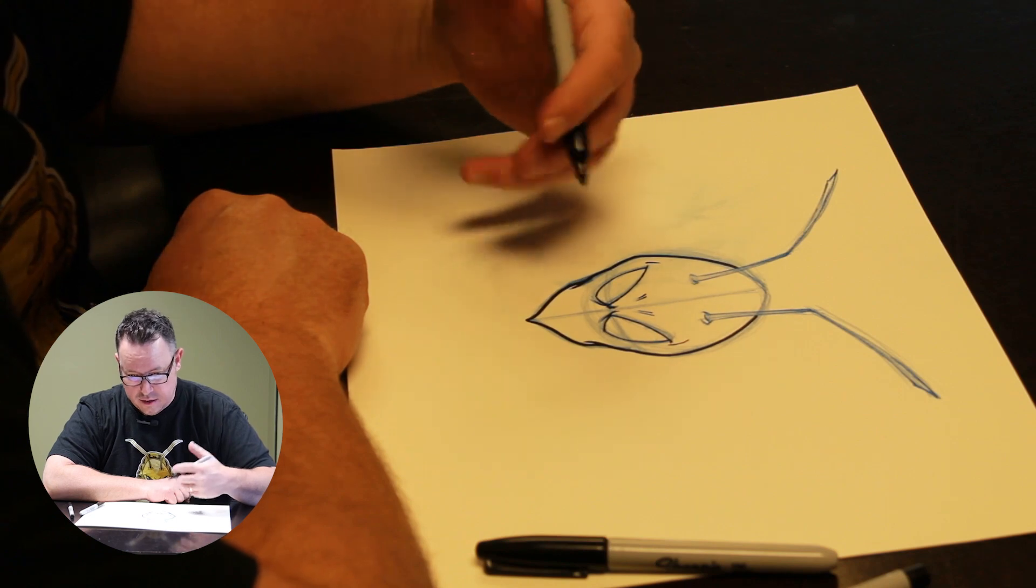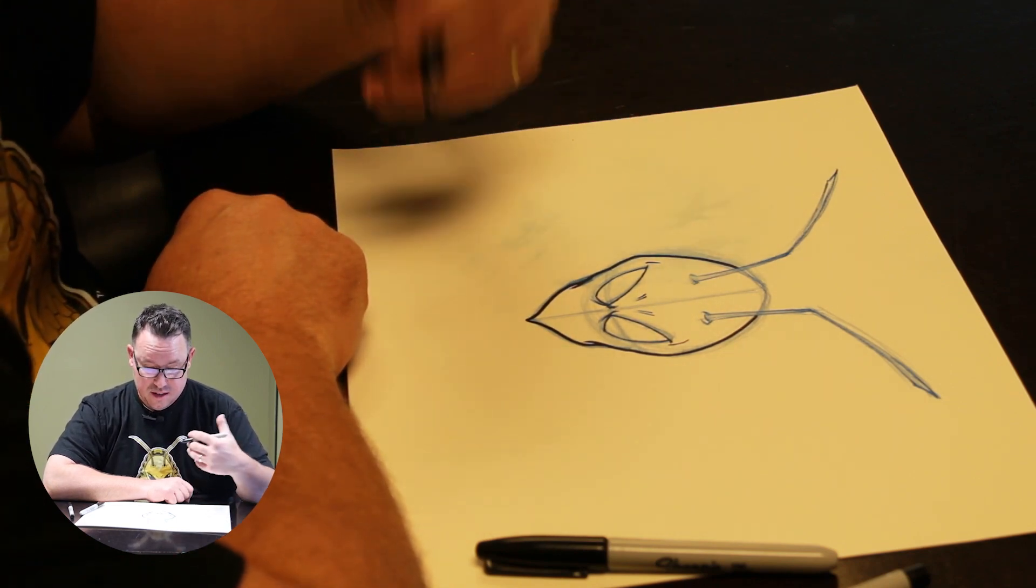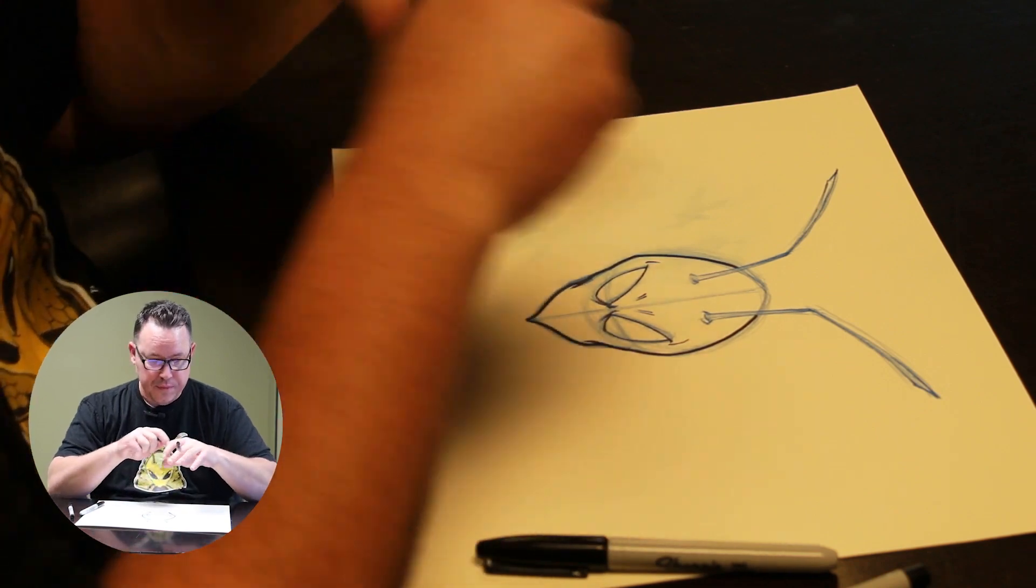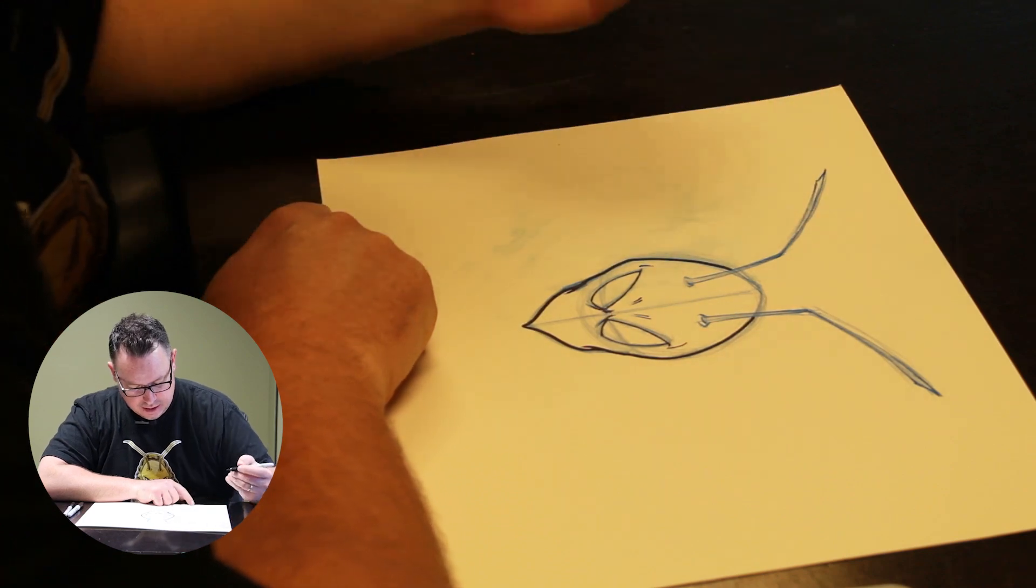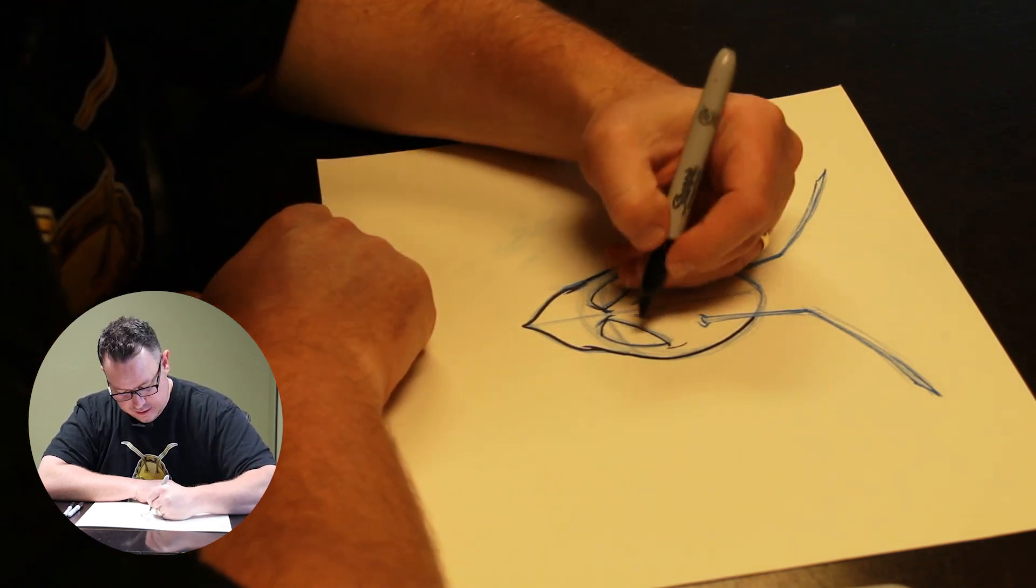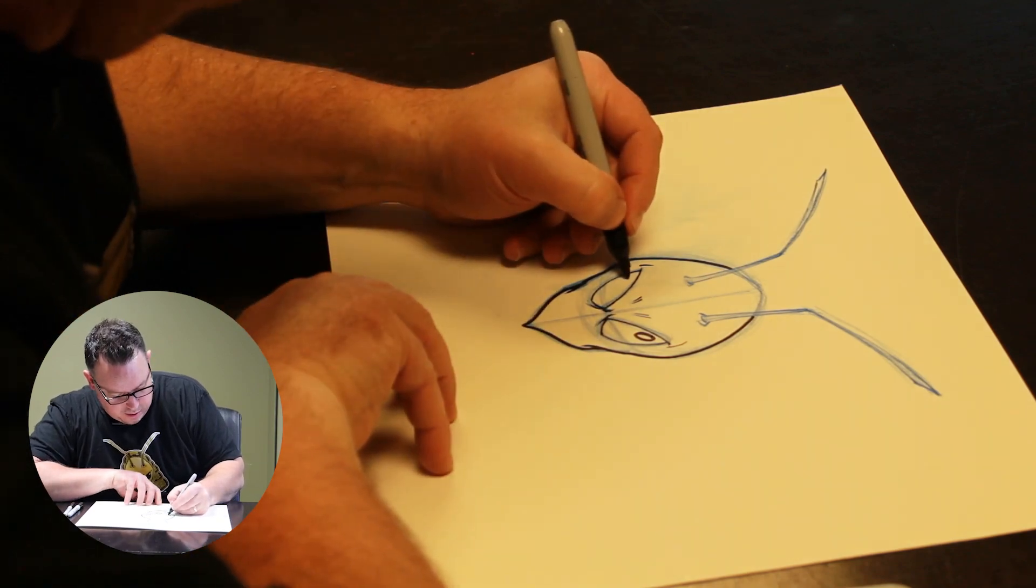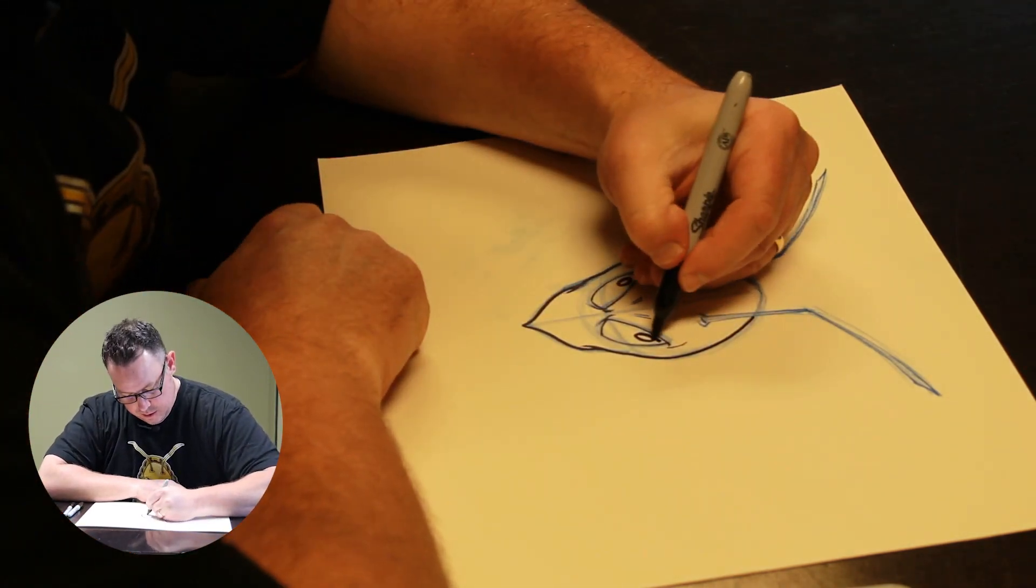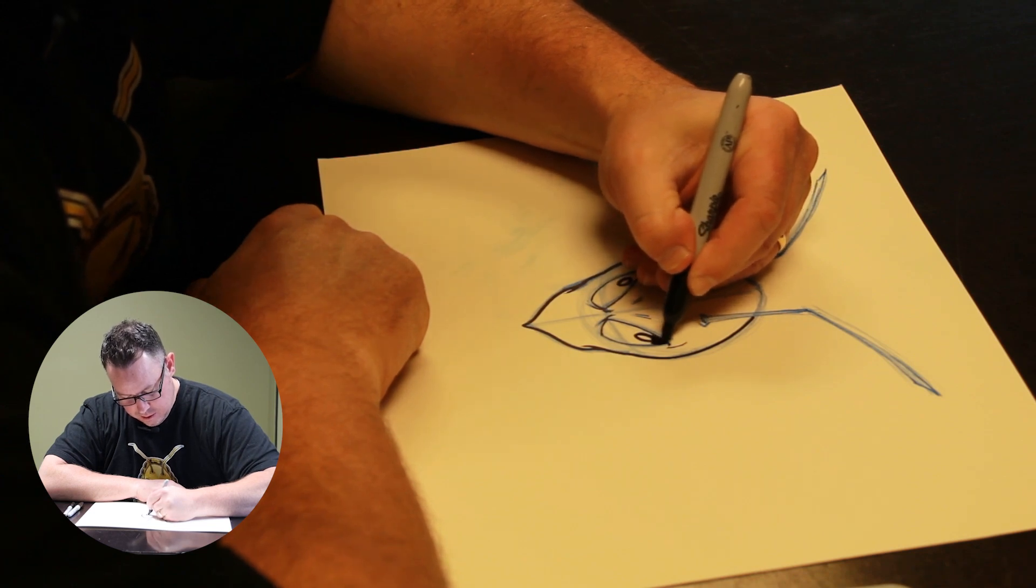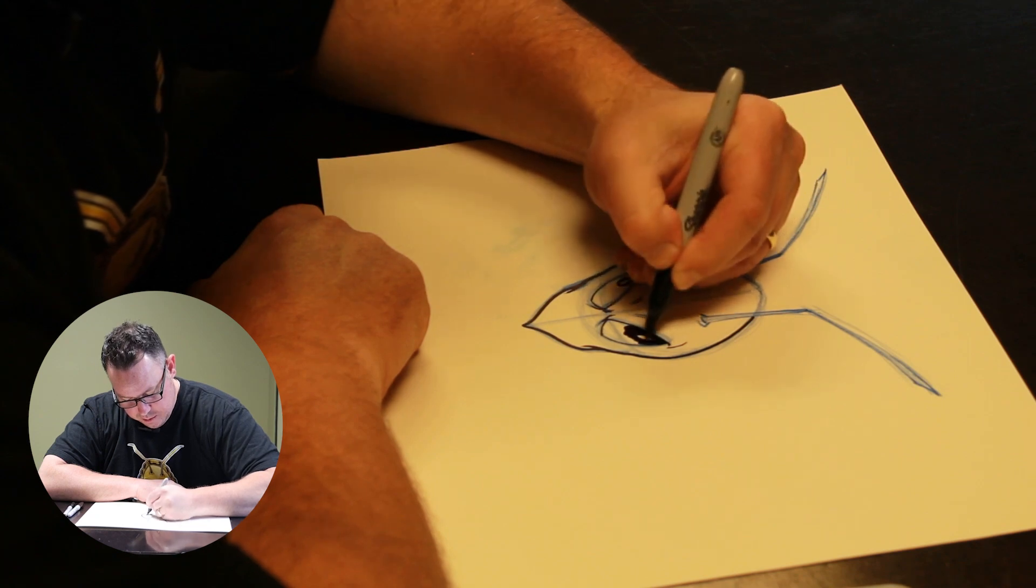When we're doing the eyes I like to leave a little highlight. Now typically when you're drawing a character you always think about where the light source is, but because this was to be inside of a baseball stadium, light sources are all around you. So I did something a little different than what I would normally do with a character. I gave multiple highlights on the eyes, so the highlights are on one side over here and one side over here so they almost reflect each other.